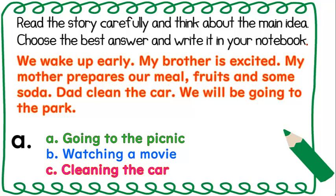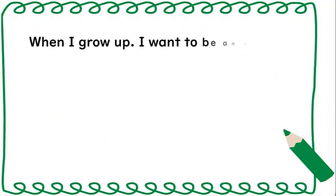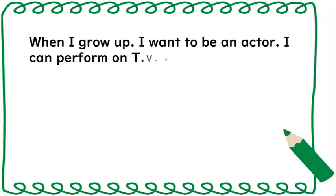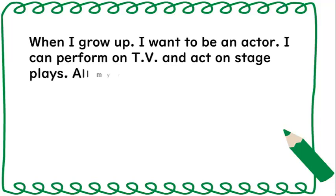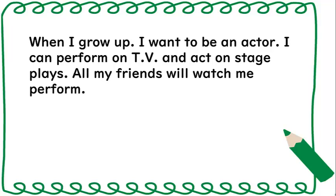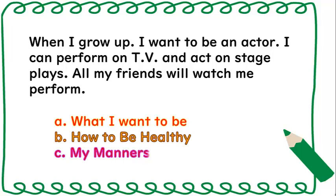You're right! It's letter A. When I grow up, I want to be an actor. I can perform on TV and act on stage plays. All my friends will watch me perform. A. What I want to be. B. How to be healthy. C. My manners. Correct! The major point of this text is letter A.